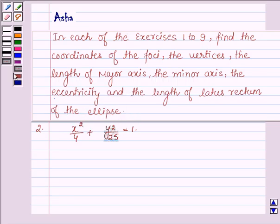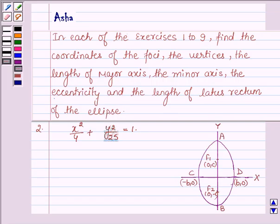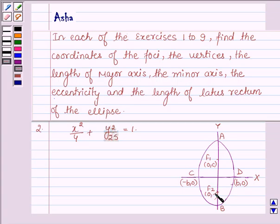First let us learn something about the ellipse. An ellipse is the set of all the points in the plane, the sum of whose distances from the two fixed points in the plane is constant. Here the ellipse shown has its major axis along the y-axis. Some parameters of the ellipse are also shown in this figure. Here F1 and F2 are the two foci.